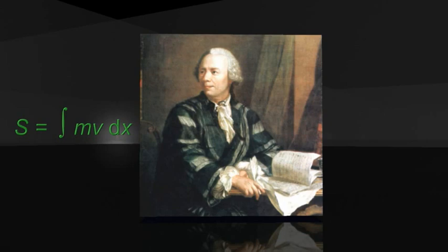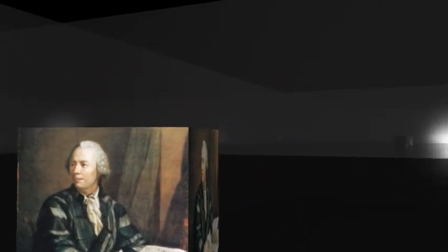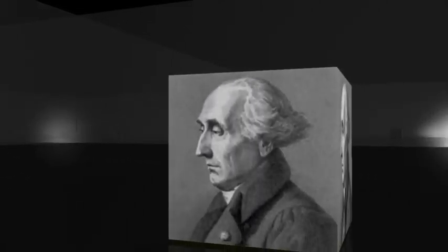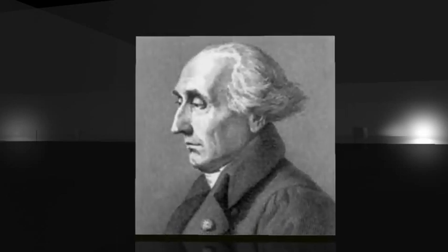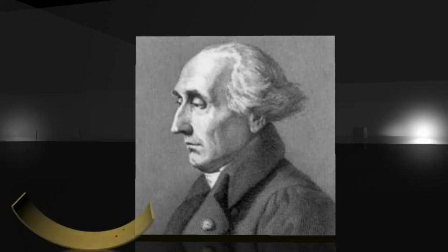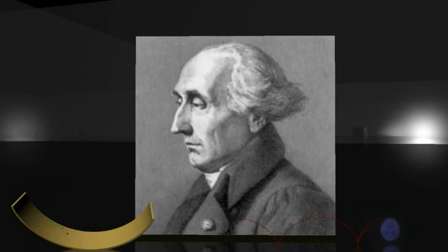Euler also developed an ingenious graphical method to find the path of minimum action for a system. Another young scientist of the time, Joseph-Louis Lagrange, eagerly applied these ideas to the tautochrone problem — the problem of finding a curve shape on which a weight started at any point will slide to the bottom in the same amount of time, regardless of its starting point. He expanded the idea of action to be the function of kinetic energy minus the potential energy.